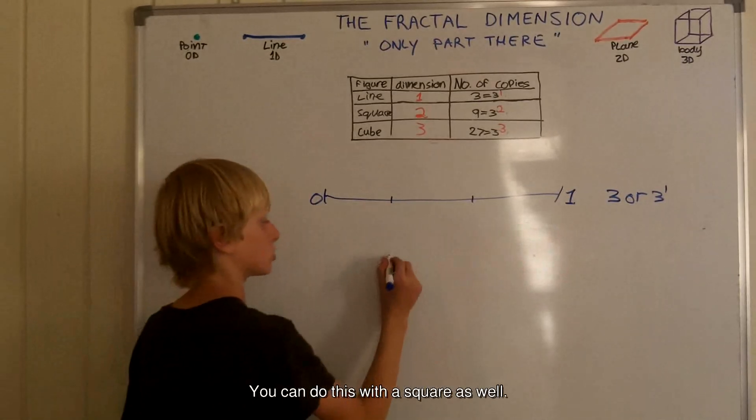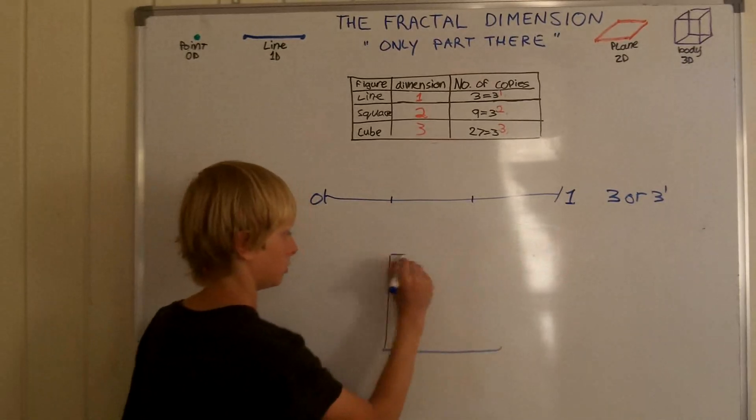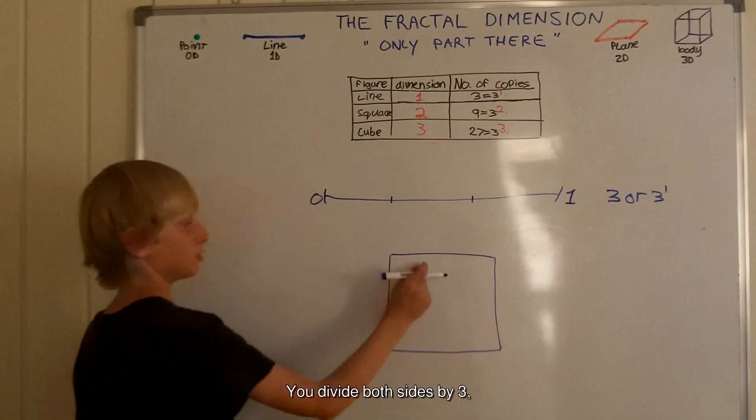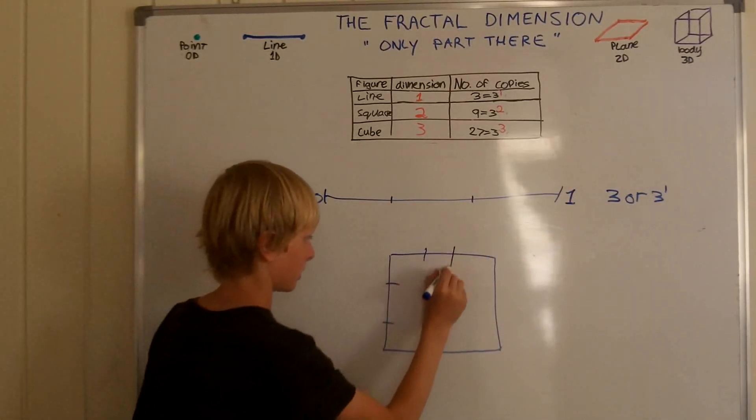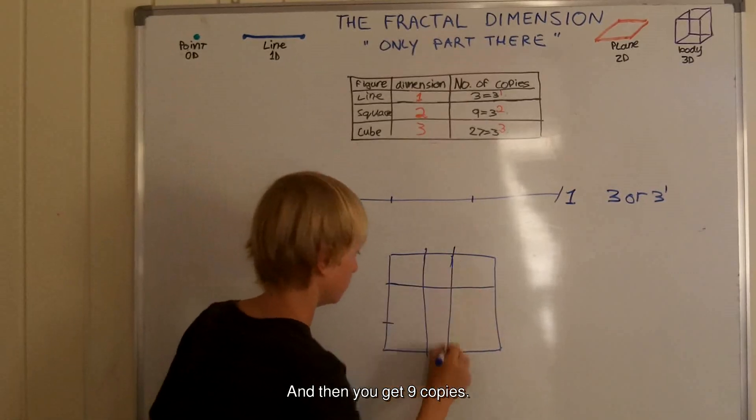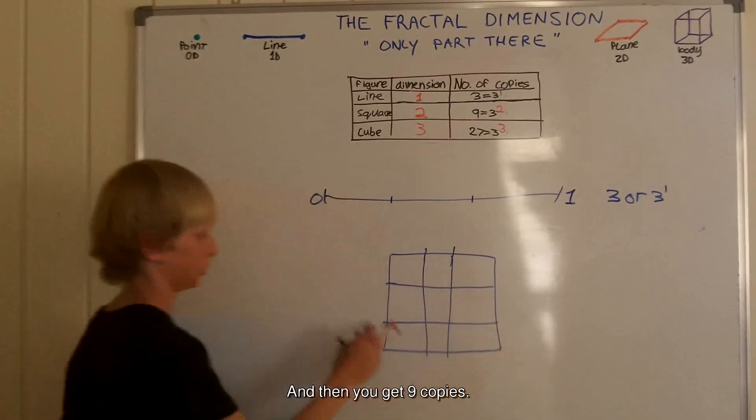You can do this with a square as well. You divide both sides by 3, and then you get 9 copies.